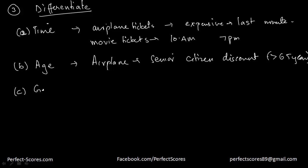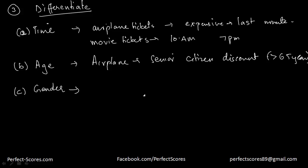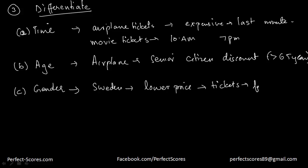You can also differentiate consumers on the basis of gender. For example, there is a football club in Sweden that charges a lower price for football tickets for females. Why? Because females have a more elastic demand for football tickets — they're less interested in football. Males have a more inelastic demand and would attend a match regardless of price.